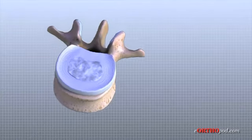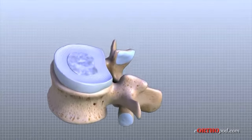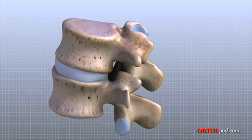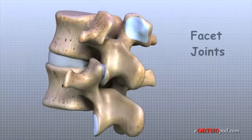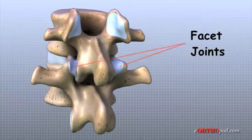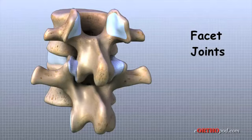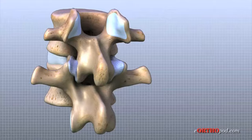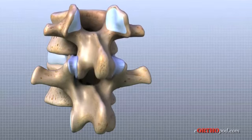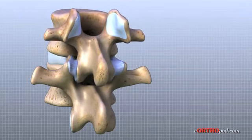Between the vertebrae of each spinal segment are two facet joints, located on the back of the spinal column — one on each side of the spine. A facet joint is a small bony knob that sticks out from the vertebral body at the back of the lumbar spine. Where these knobs meet, they form a synovial joint that connects the two vertebrae. The facet joints of the lumbar spine move together in a sliding motion as you bend forward and backward.